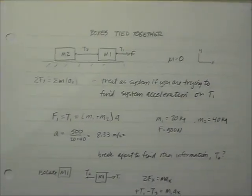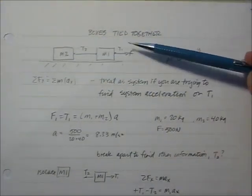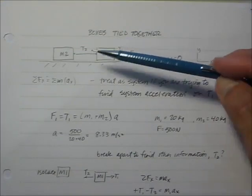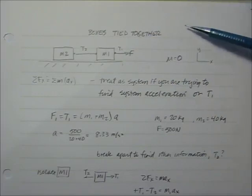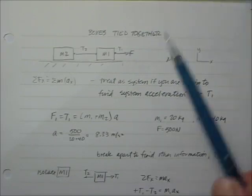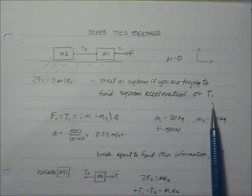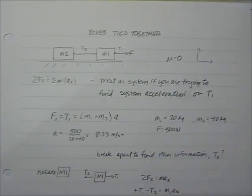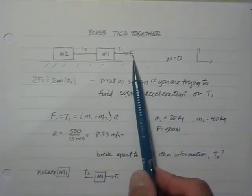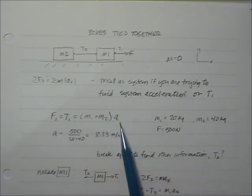Let's look at boxes tied together. Here's a mass M1 and a mass M2, and we're going to pull with a force. The applied force here equals T1, but that tension is not the same as the tension between the masses. We can treat the system — as long as they're moving together — such that the sum of the forces in X equals the sum of the masses times acceleration in X. We say there's no friction, mu equals zero, so F equals T1 equals M1 plus M2 times acceleration.